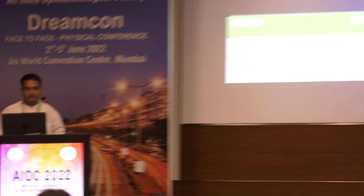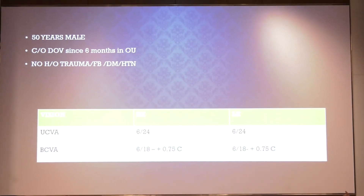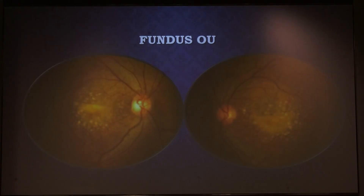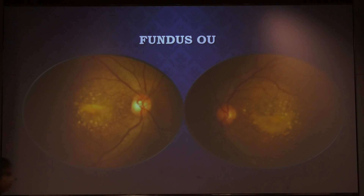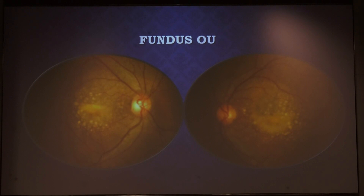There was no history of any trauma or any systemic illness. On examination, his best corrected visual acuity was 6/18 in both eyes. Anterior segment examination was normal, whereas fundus examination showed clear media, about 0.2 cup-to-disc ratio, 2/3 AV ratio, but in the macular area a yellowish sub-retinal deposit of around 2 to 3 disc diameter in a crescentic shape was seen along with drusenoid changes.